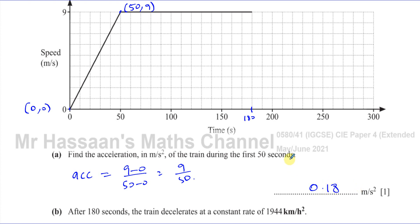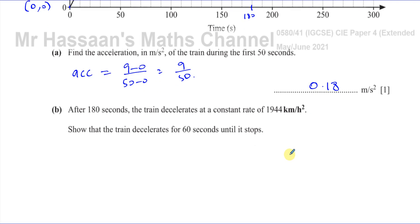There's the answer to part A. Now for part B, it says: after 180 seconds, the train decelerates at a constant rate of 1,944 kilometers per hour squared. Show that the train decelerates for 60 seconds until it stops. One of the things you should be very aware of — especially in the IGCSE and in any exam — is that they sometimes bold type certain parts of a question. Here they have bold typed the units, so straight away you should ask yourself why they put that in bold.